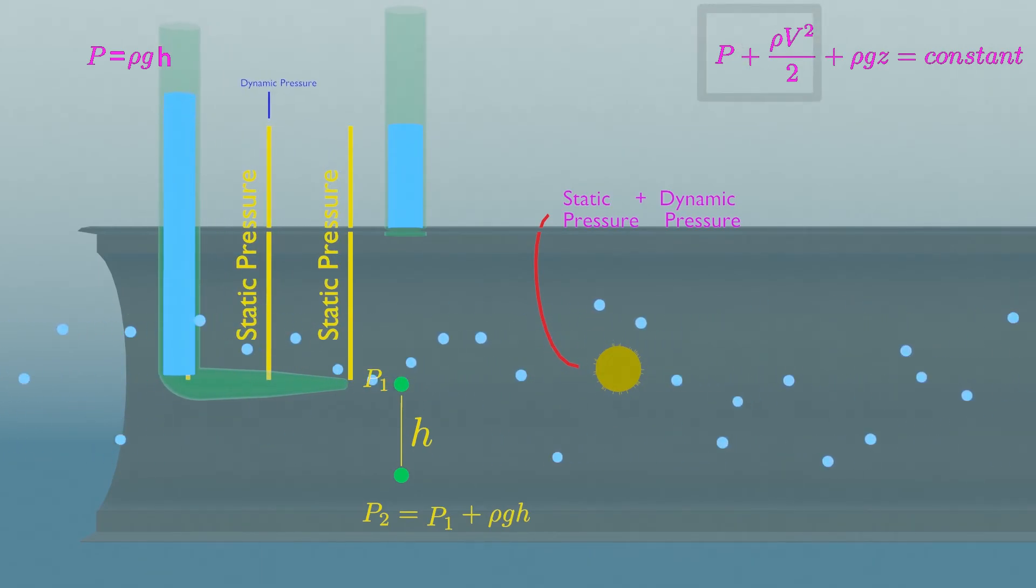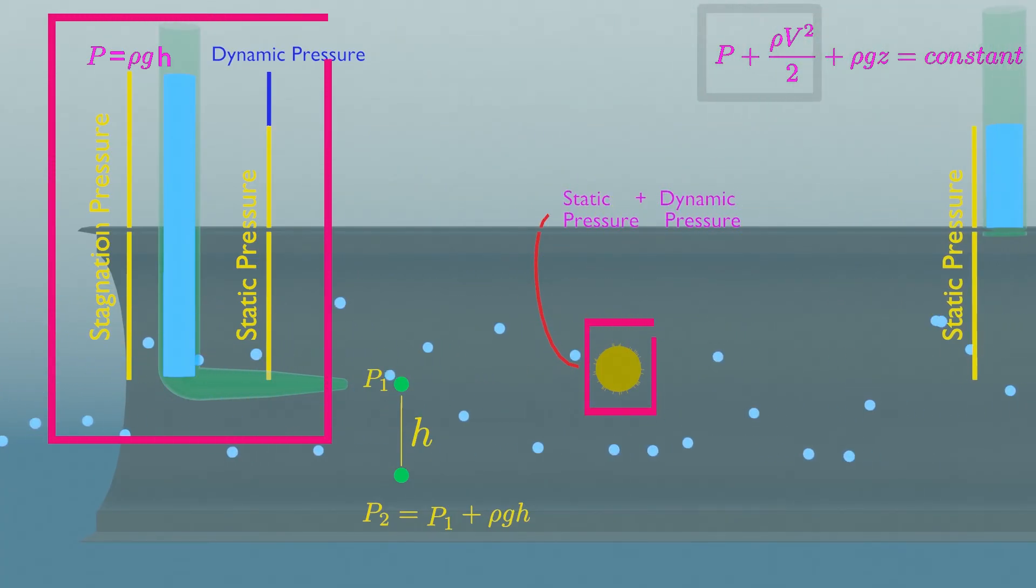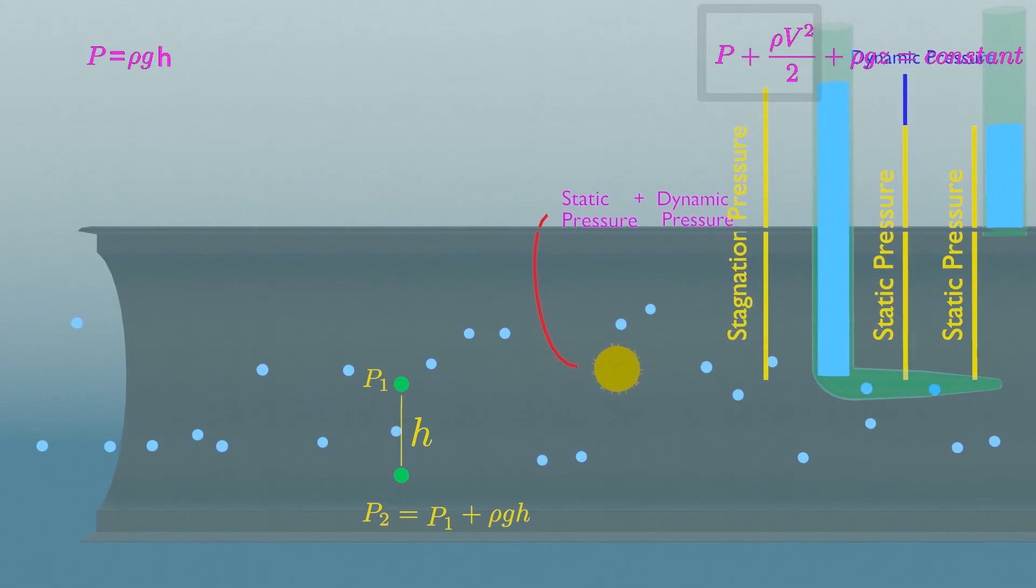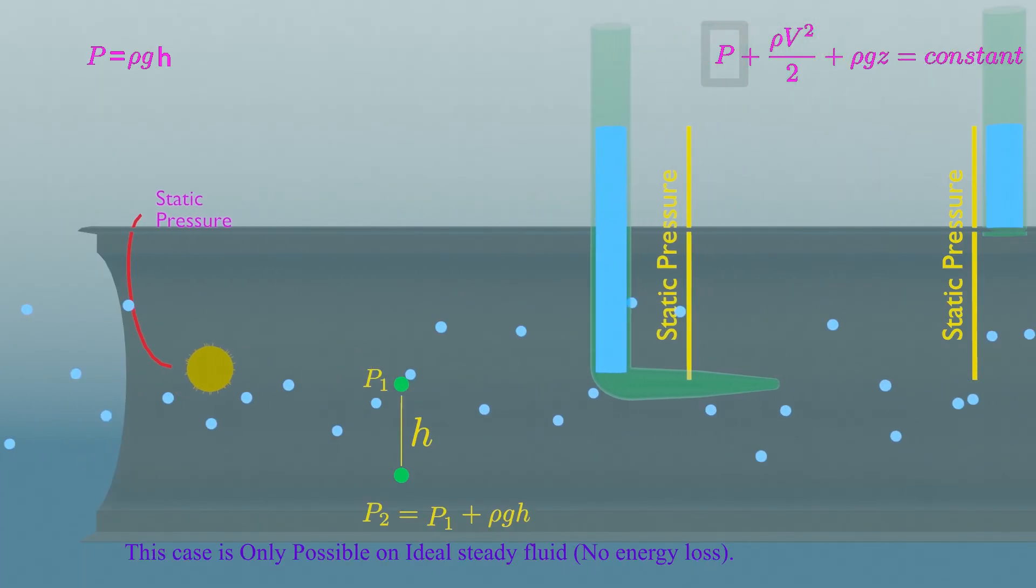The sum of static and dynamic pressure is known as stagnation pressure. So, the ball and pitot tube experience stagnation pressure if they both are fixed at a point. But if they move relative to fluid, then they experience static pressure only.